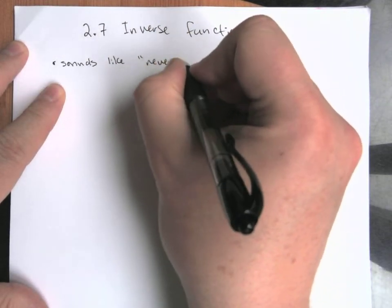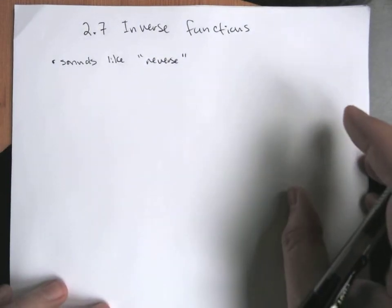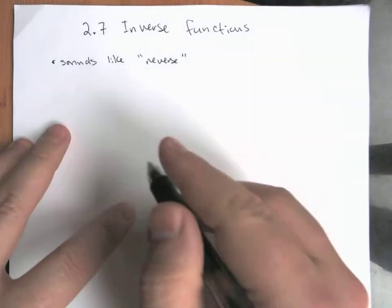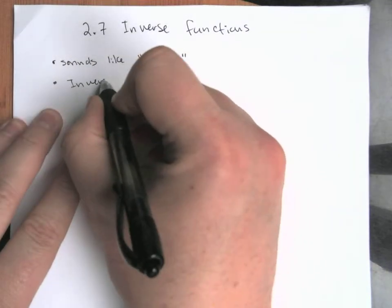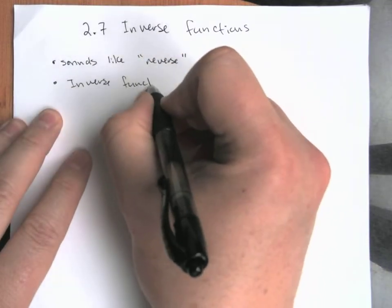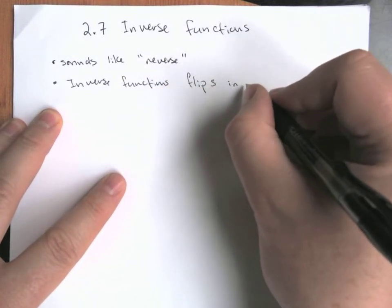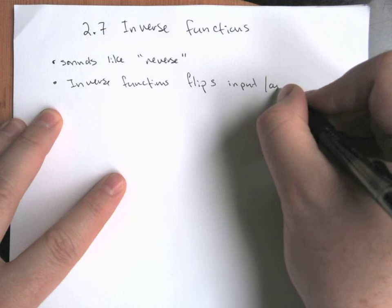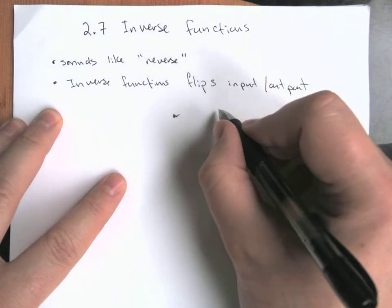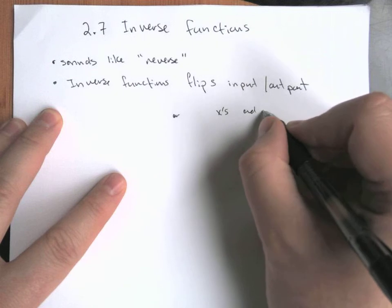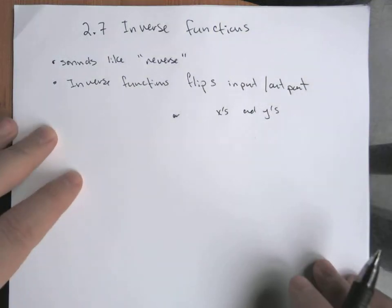An inverse function is essentially a reverse function. What we're doing is sort of flipping the roles, flipping the input and the output. Or said another way, we're flipping our x's and y's, flipping the domain and the range.